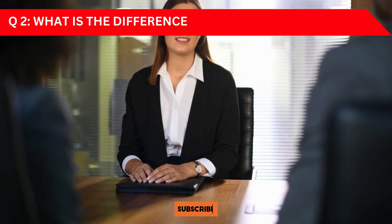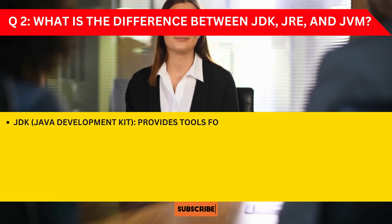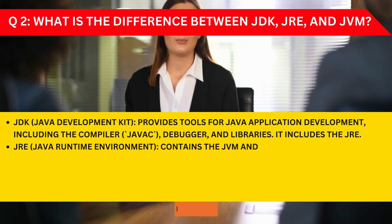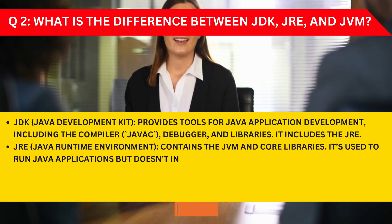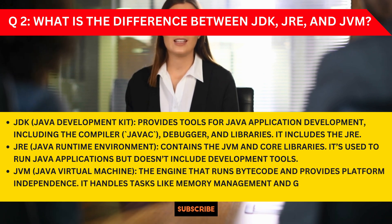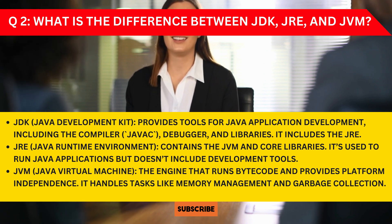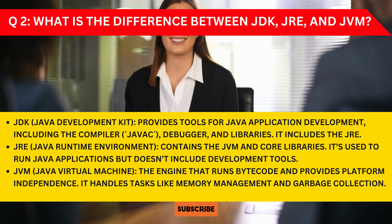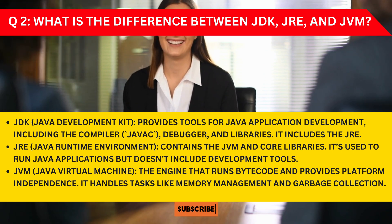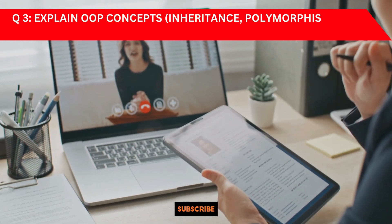Question 2: What is the difference between JDK, JRE, and JVM? Make sure you have prepared two to three sentences about each. For example, JVM is the engine that runs bytecode and provides platform independence — it handles tasks like memory management and garbage collection. Go through the answers for JDK, JRE, and JVM and prepare well.